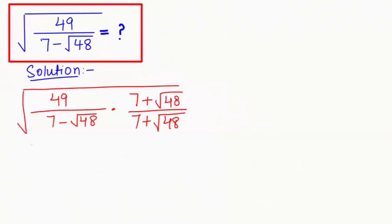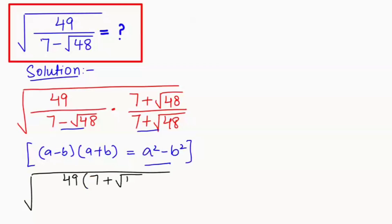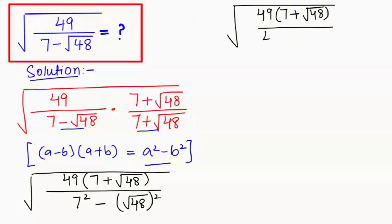Now I'm going to apply the algebraic identity that is (a minus b)(a plus b) equals a squared minus b squared. So in the denominator we get 7 squared minus root of 48 squared. 7 squared is 49, and root of 48 squared is 48, so 49 minus 48 equals 1. The denominator becomes 1.